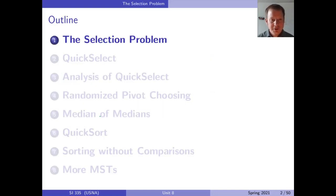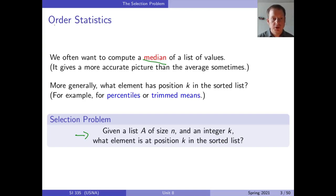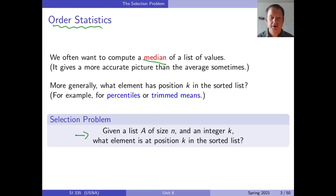The first thing we're going to be looking at is the selection problem — that's what we already talked about in the puzzles today. This is the problem of finding an element at position k in the sorted list. So it's thinking about finding the median, or more generally what's called order statistics. You can think of this as percentile — if you have a bunch of data, what's the 25th percentile? That means the n/4 value of k. These kinds of computations come up and are very important for statistics. But the naive way of doing it just by sorting isn't always the best way.